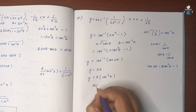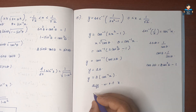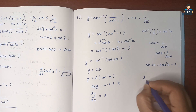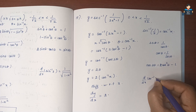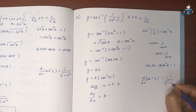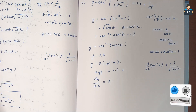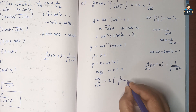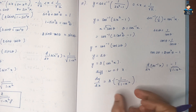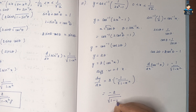Now differentiate with respect to x. So dy/dx equals 2 times the differentiation of cos inverse of x, which is minus 1 by square root of 1 minus x square. So the answer is minus 2 by square root of 1 minus x square.